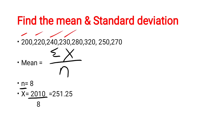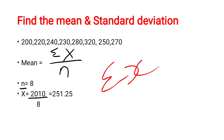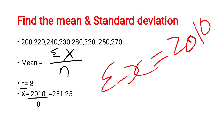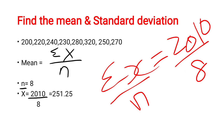Next we find x̄. x̄ = Σx / n. Add all the x values: 200 + 220 + 240 + 230 + 280 + 320 + 250 + 270. When you add all the x values, you get 2010. So Σx = 2010. Divided by n = 8, that gives 2010 / 8 = 251.25. So x̄, that is the mean, is 251.25.